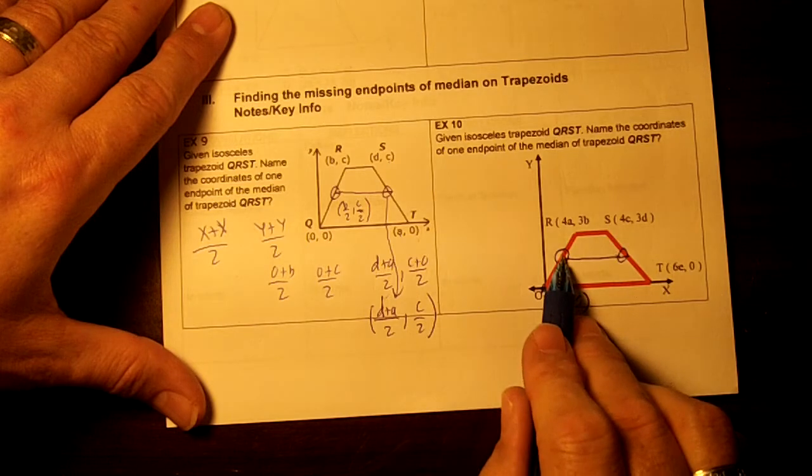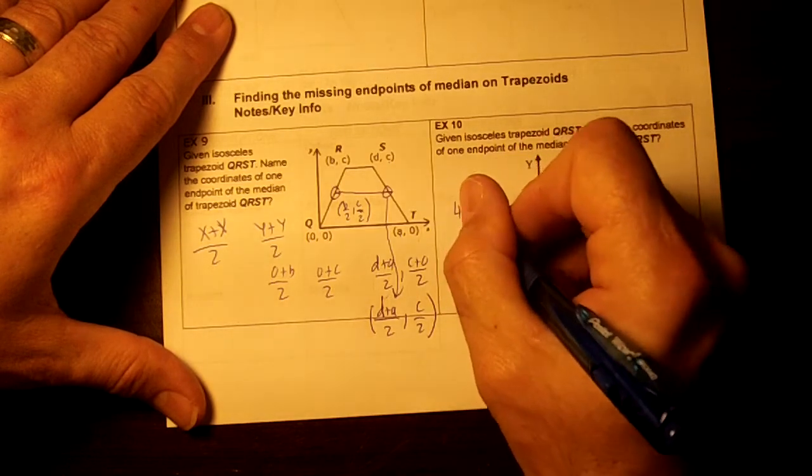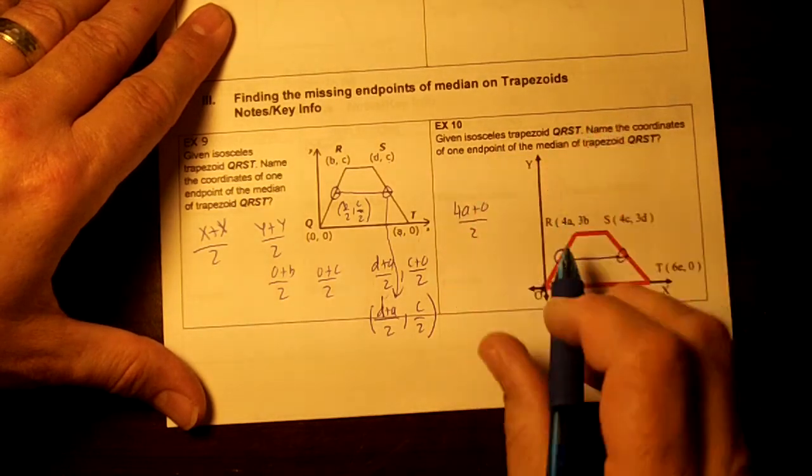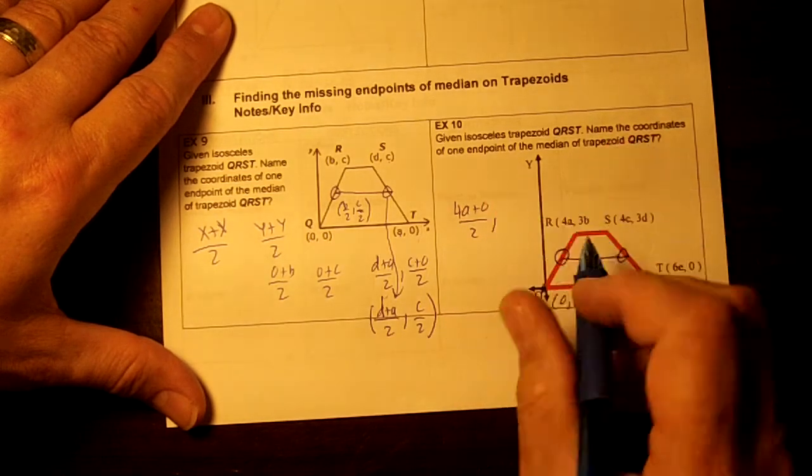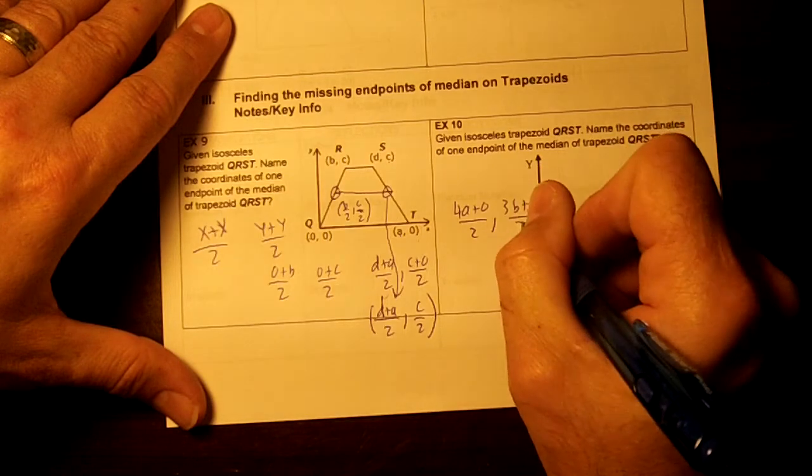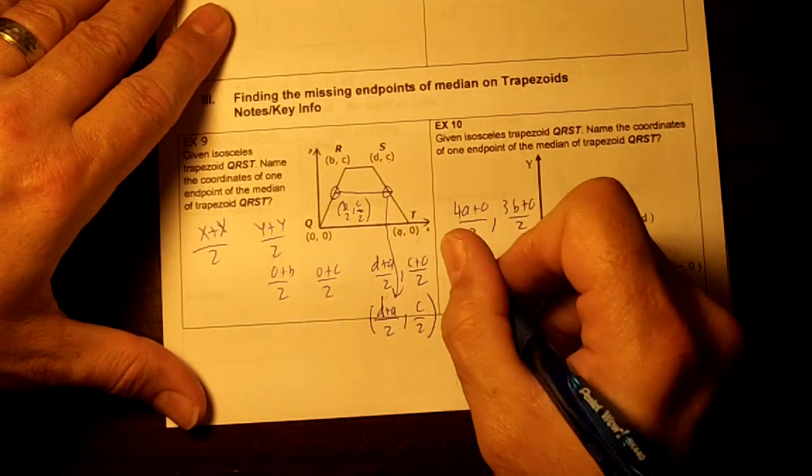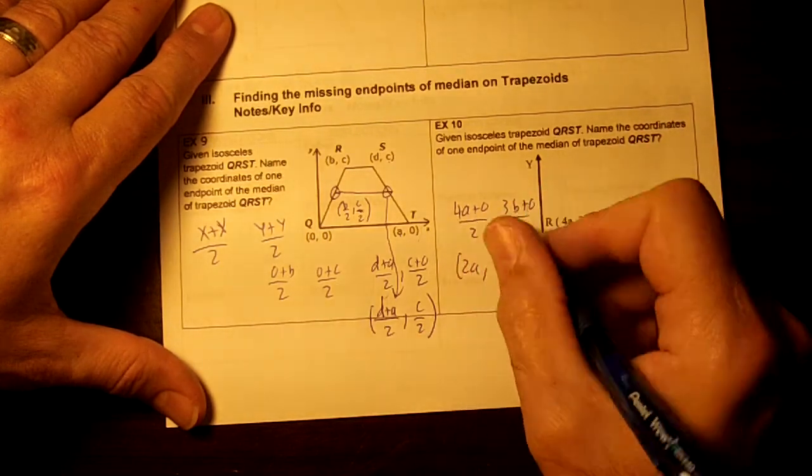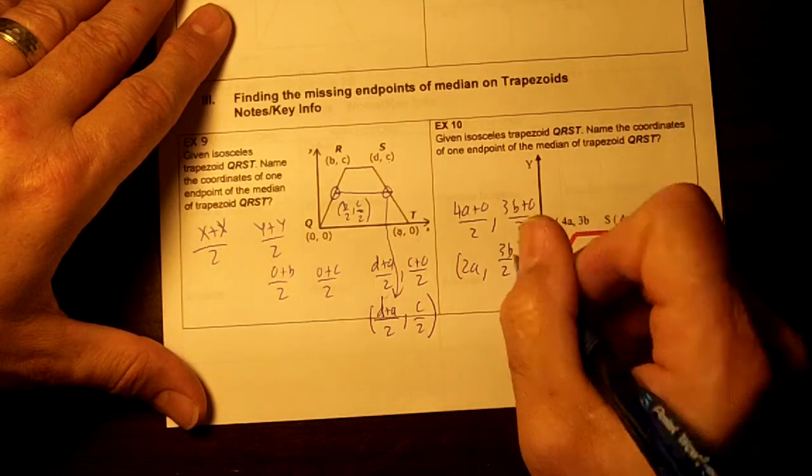So this midpoint would be 4a plus 0 divided by 2, comma 3b plus 0 divided by 2. This could simplify to 2a, but this can't simplify 3b over 2.